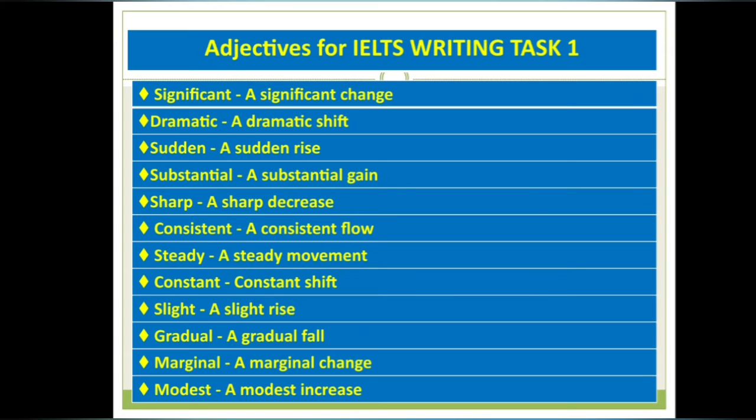'Sudden' is another word — 'a sudden change' or 'a sudden rise.' 'Substantial' is also used: 'a substantial gain' or 'a substantial decrease.' 'Sharp' is another word — we can say 'a sharp increase.' When there is a continuous slow trend going on, whether downward or upward, we use 'consistent.'